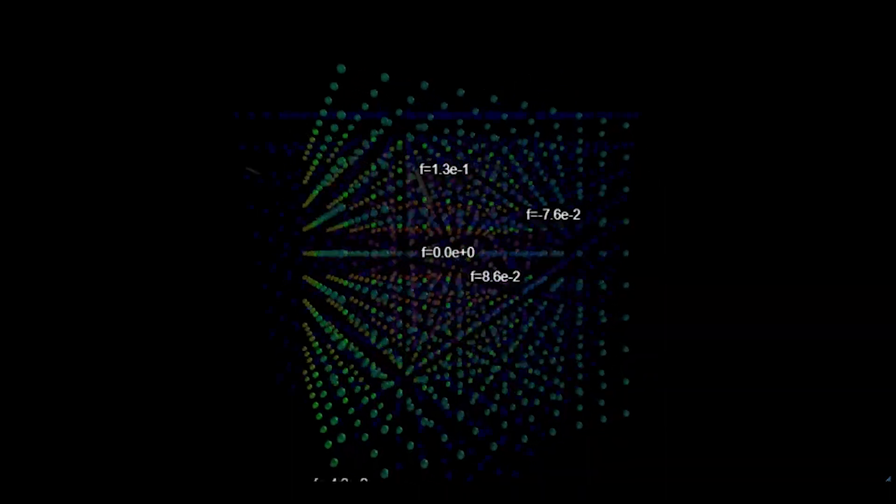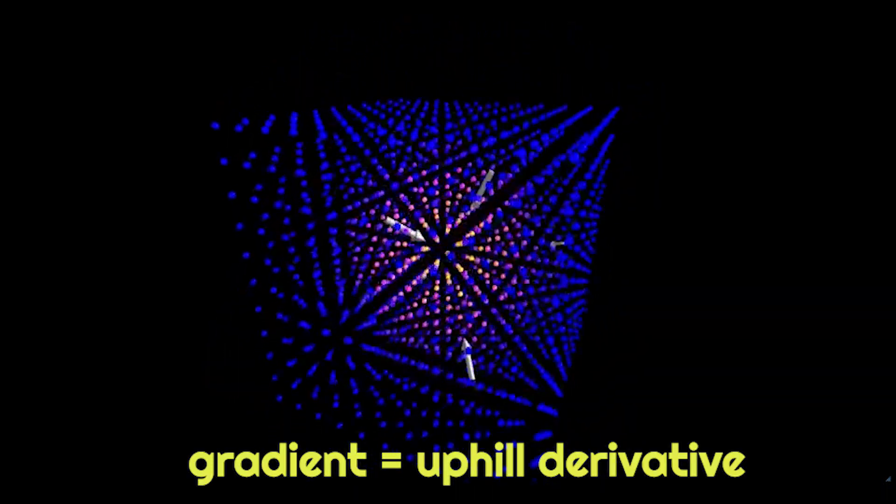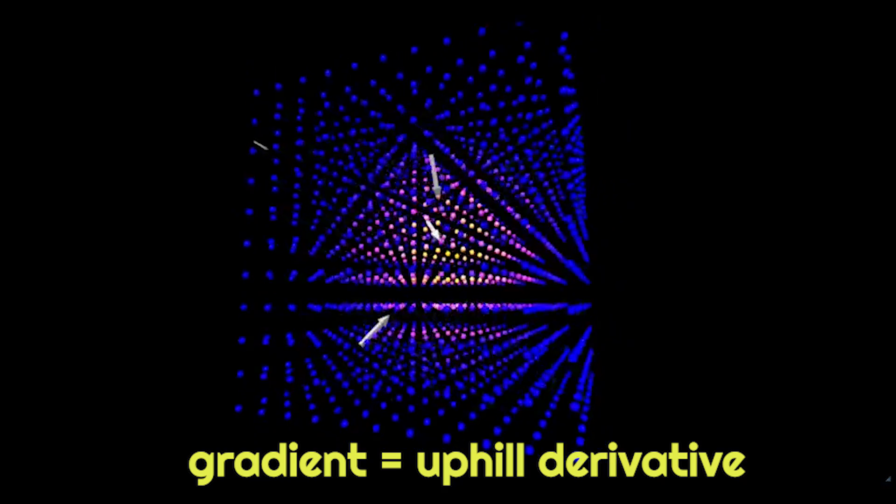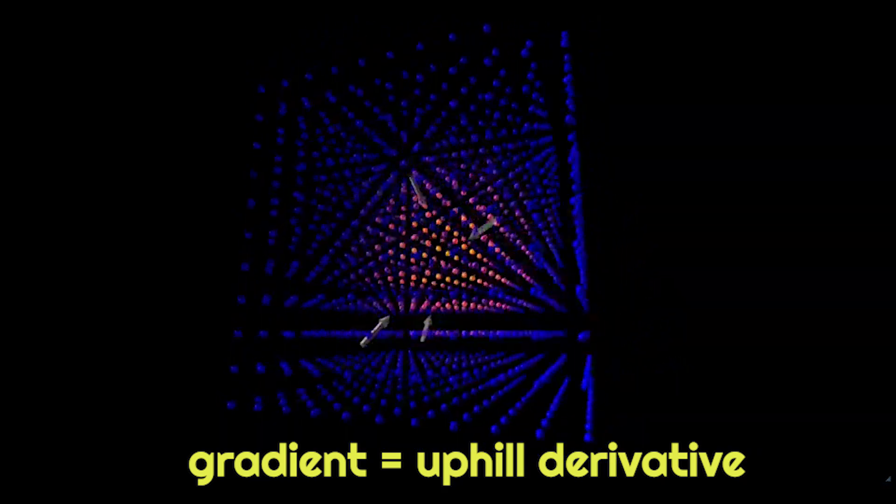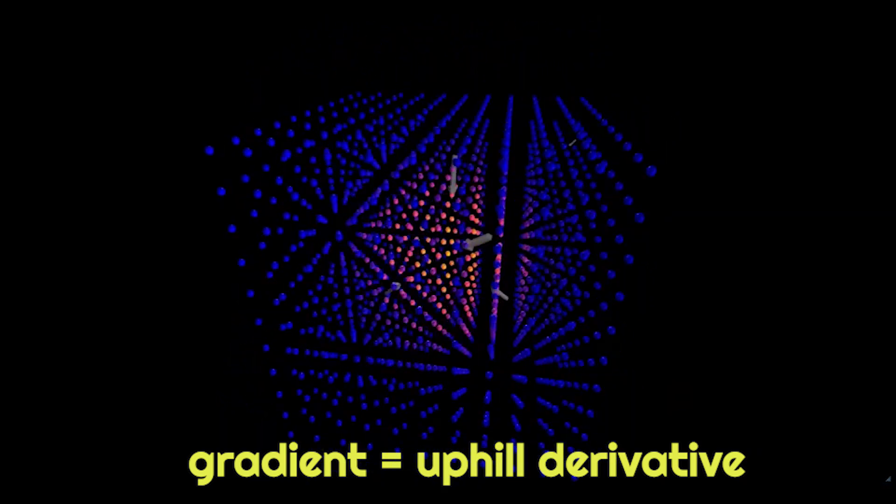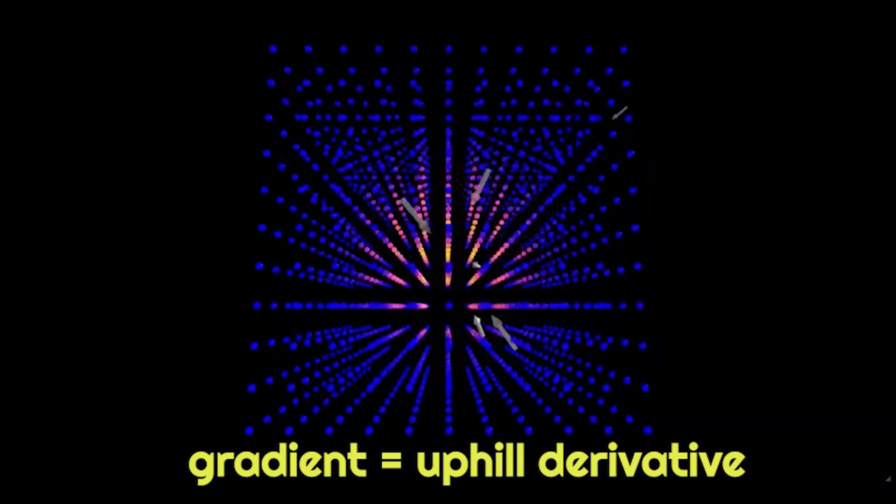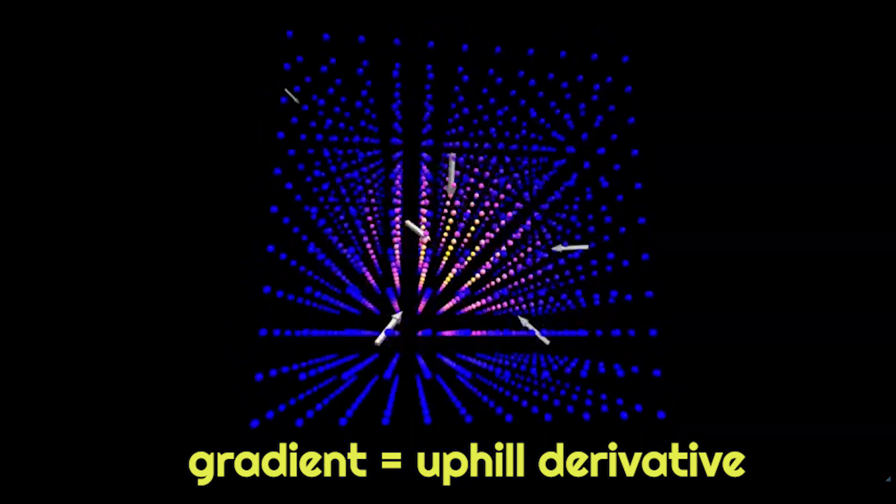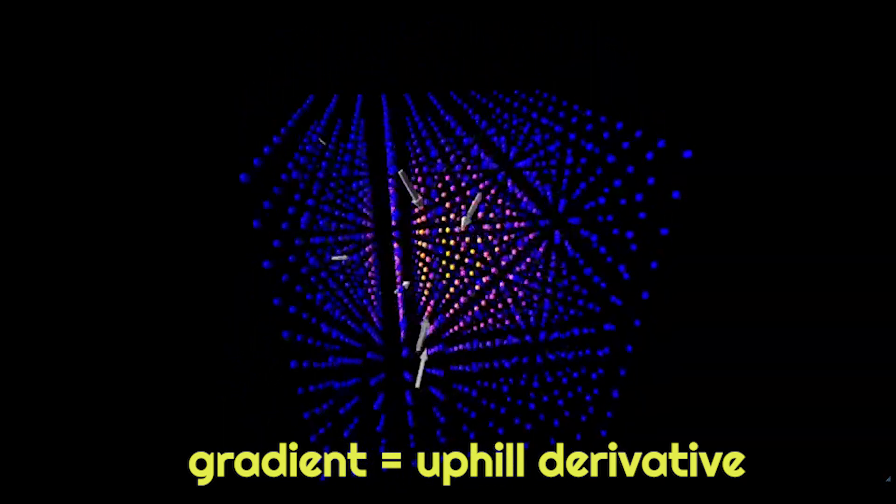When we work with scalar fields we often need to apply a three-dimensional version of the derivative called the gradient. The gradient of a scalar field gives the three-dimensional slope of the field at each point in space. The gradient tells you what direction is uphill at each point. You can also say that the gradient always points from the region of lower value to the region of higher value.